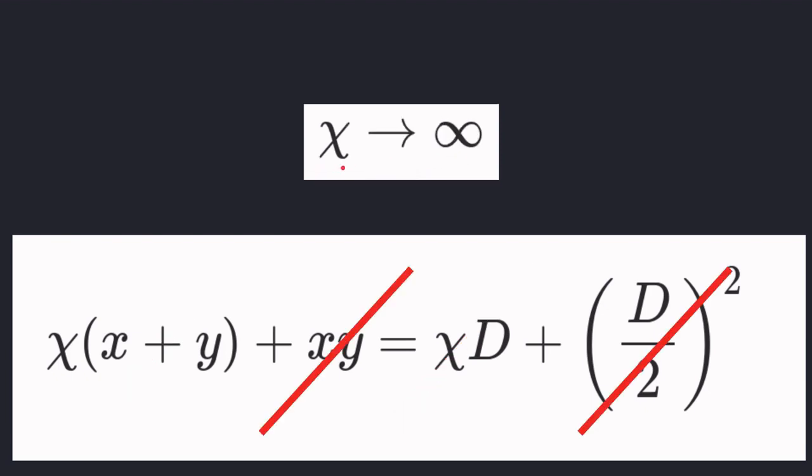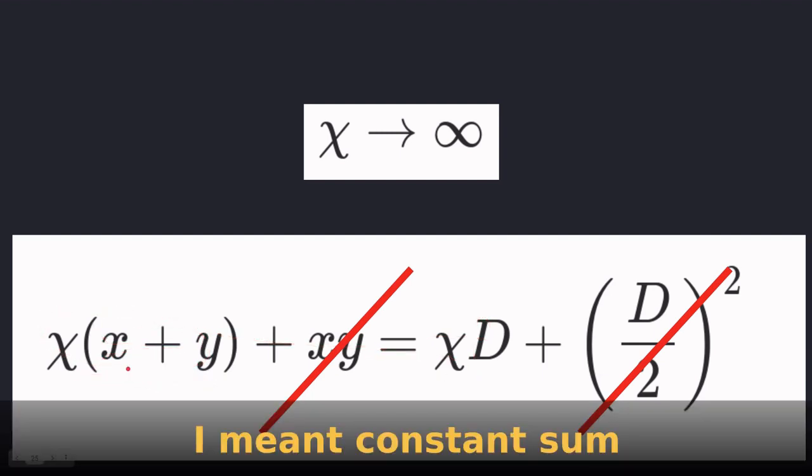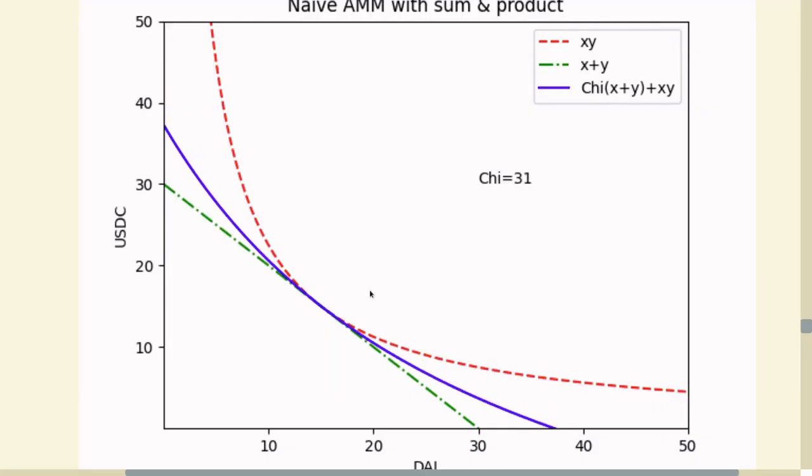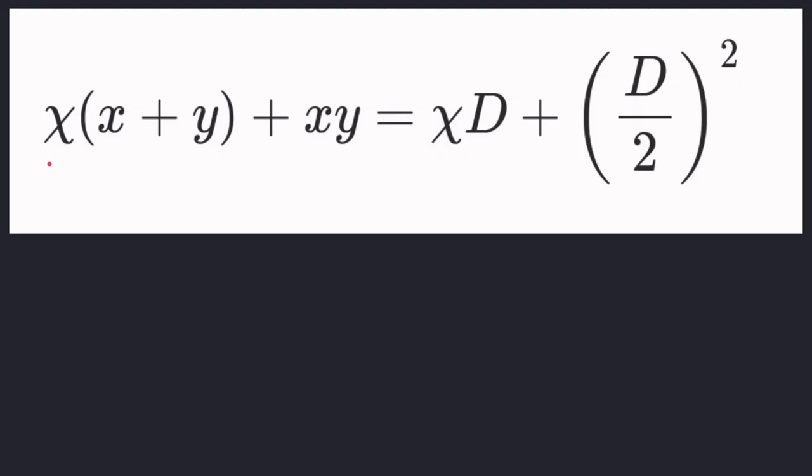On the other hand, when chi is a really big number, these two parts of the equation become relatively small to this and this part of the equation. So we're left with an equation that looks like a constant sum curve. You can see here how increasing chi makes the curve more and more flat. Now when chi is big, the curve for this equation flattens out. But this is also true when x plus y is big. So we want to express that when chi is big, the curve is flat. And when chi is small, it looks like the constant product curve, regardless of how big or small this number is.